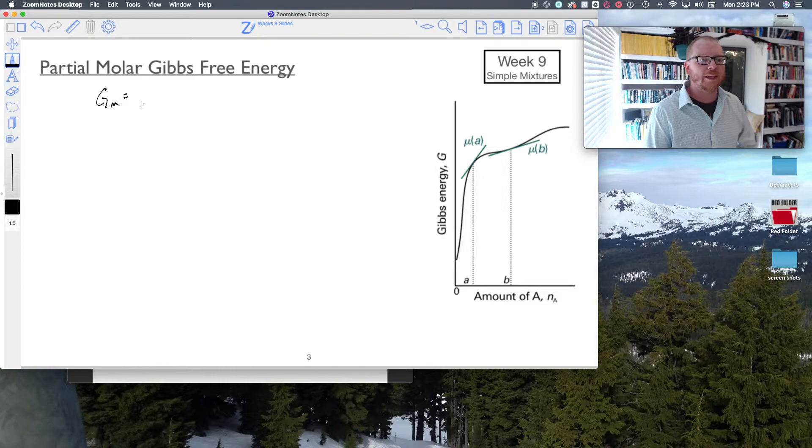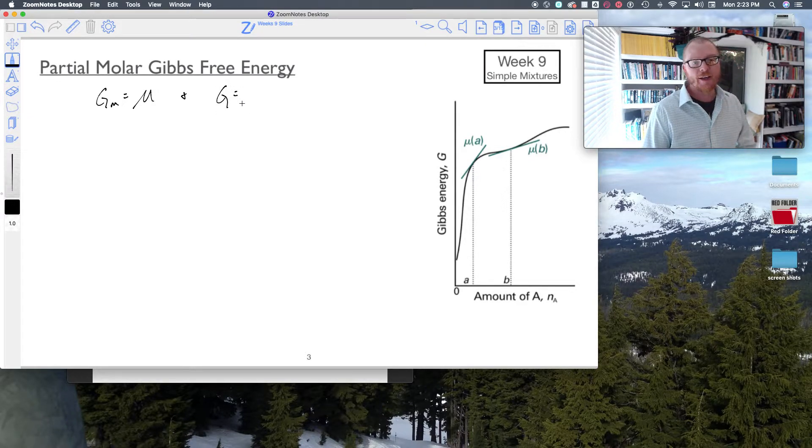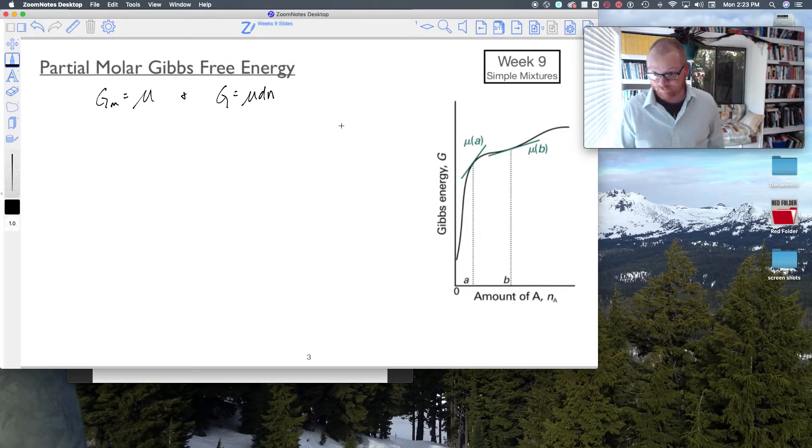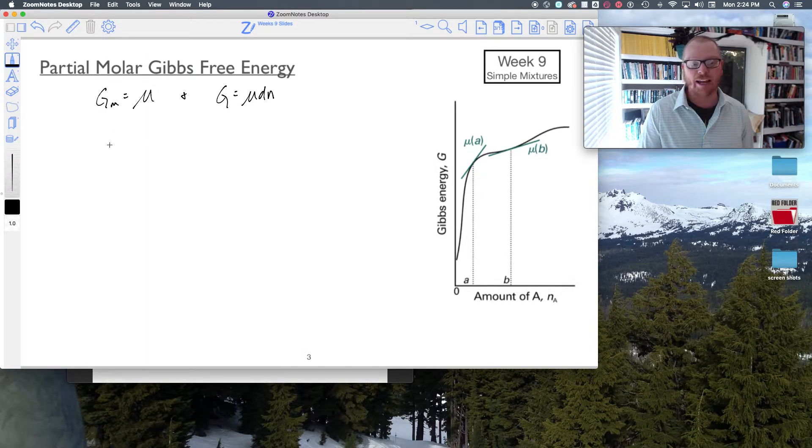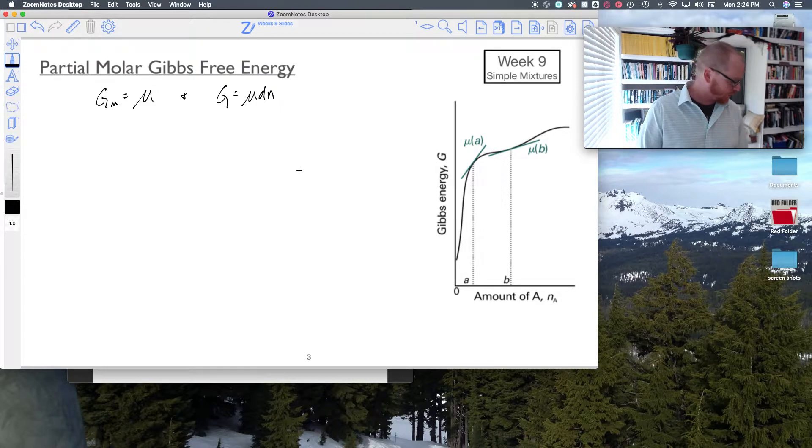I'll remind you that the molar Gibbs energy is chemical potential. And similarly, I could also just say G equals μ times dN, right? So if we know that molar free energy, which is really G divided by dN, then I just did some algebra here.